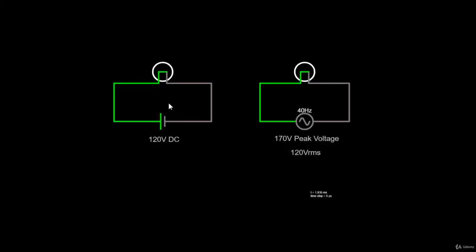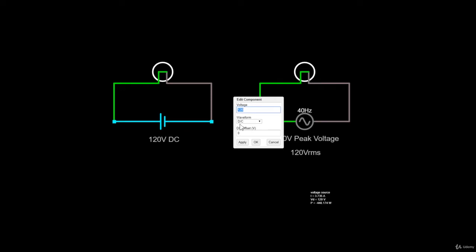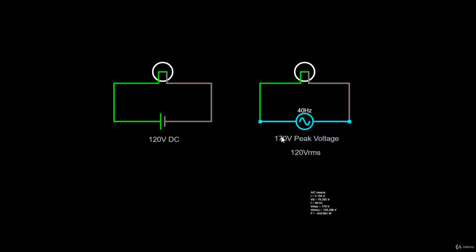So for example, we have here two almost identical circuits. The only difference is that the first light bulb is driven by a 120V DC power source, and the other one from a 170V AC power source.